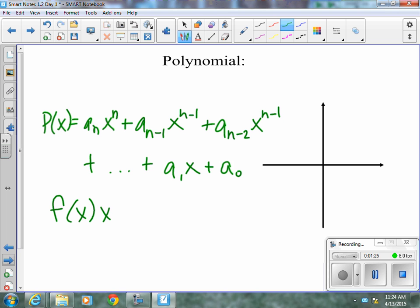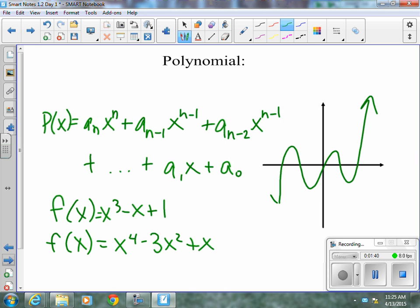Some examples, x cubed minus x plus 1, or x to the fourth minus 3x squared plus x. And they look a little bit like a roller coaster. It could look like multiple things. This is not a picture of either of those function examples I've provided. Polynomials are just nice curves.